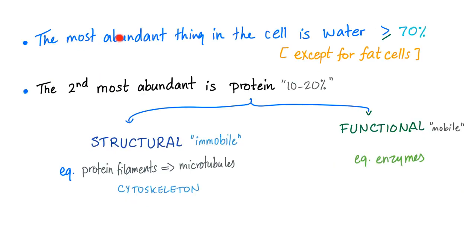As you know, the most abundant thing in the cell is water, except for fat cells, because water and fat do not mix. The second most abundant is protein. We have two types: structural proteins and functional proteins. Structural proteins are immobile; functional proteins are mobile. Structural proteins such as your cytoskeleton. Functional proteins such as enzymes.